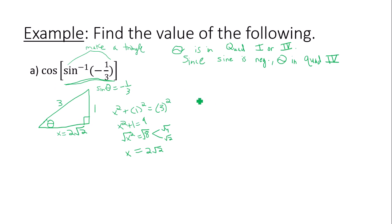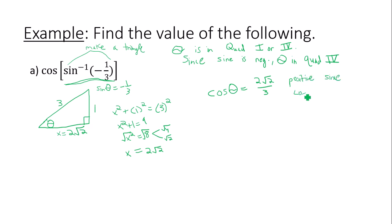Now let's apply cosine to that angle theta. Cosine of theta is adjacent over hypotenuse. Adjacent is two square roots of two, and the hypotenuse is three. Is this positive or negative? Remember, theta is in quadrant four, and cosine is positive in quadrant four. So the answer is positive: two square roots of two over three.